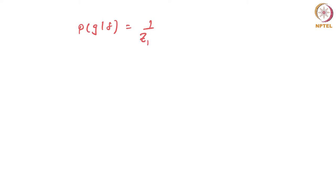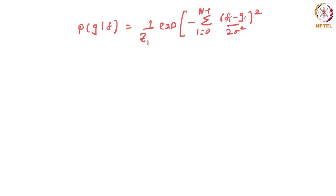P(G|F) can be written as exponential of minus the sum from i=0 to n-1 of (Fi minus Gi) squared divided by 2 sigma squared. The prior P(F) is also an exponential distribution — some normalization constant times exponential of minus U(ω).